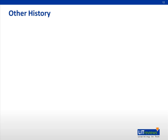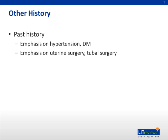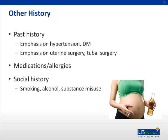After eliciting a detailed history about the presenting complaint, the present pregnancy, and the past obstetric history, we need to move on to the other history. We need to know the past medical and surgical history, with particular emphasis on hypertension and diabetes, and any previous uterine or tubal surgeries. Also ask for any current medications and drug allergies. The social history should cover smoking, alcohol, or substance misuse. The family history should specifically ask about diabetes, hypertension, or preeclampsia in family members.